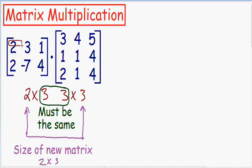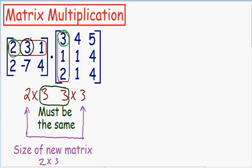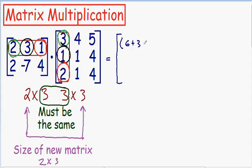I'm going to put a box around the first row of the first matrix, and another box around the first column of the second matrix. To make things easier to see, I'm going to circle the first number in the row in green and the first number in the column in green, the second number in the row and column in black, and the third number in the row and column in red. Multiplying the green numbers: 2 times 3 is 6. The black numbers: 3 times 1 is positive 3. The red numbers: 1 times 2 is positive 2. So now we have multiplied the first row by the first column.